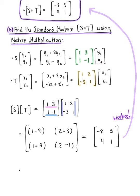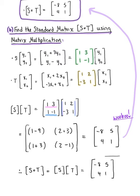We can officially confirm that the standard matrix of S∘T is equal to the product of the standard matrices — the standard matrix of S times the standard matrix of T. Both methods yield the same result: [−8, 5; 4, 1]. There you have it — verification of the theorem.